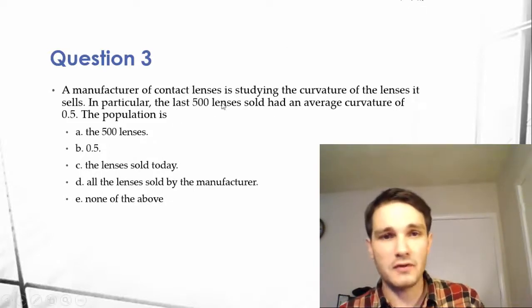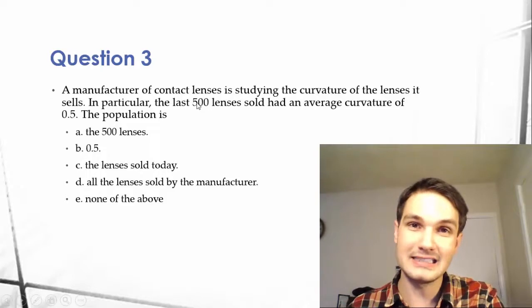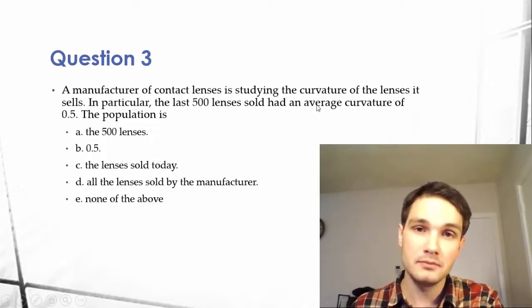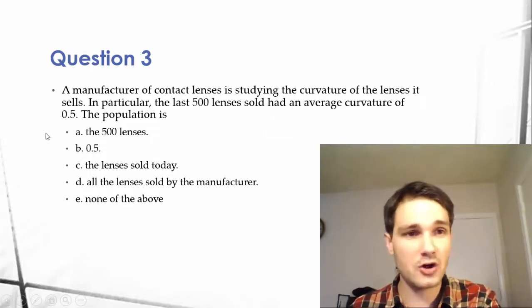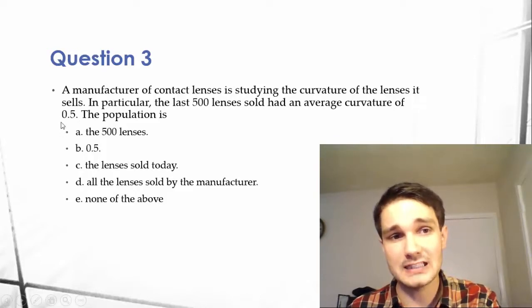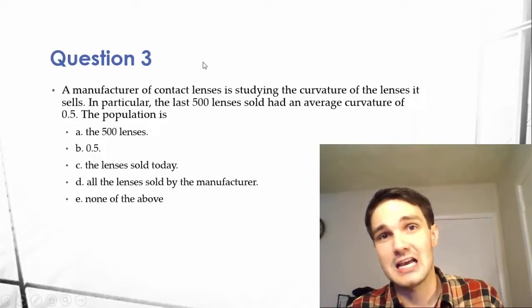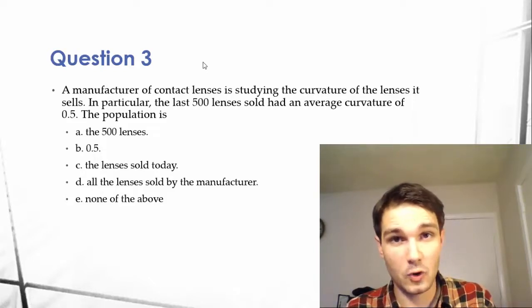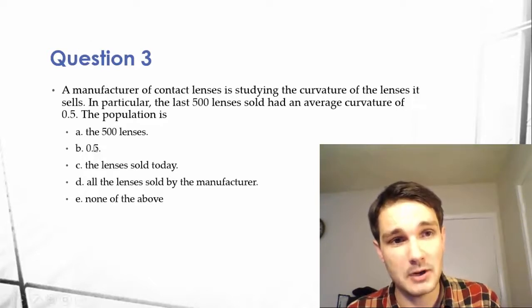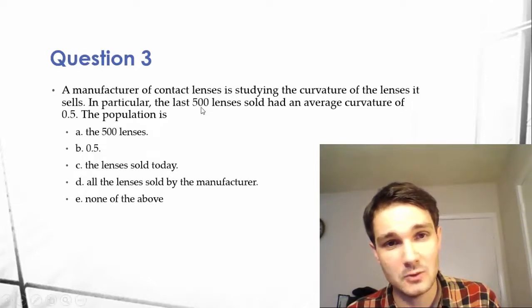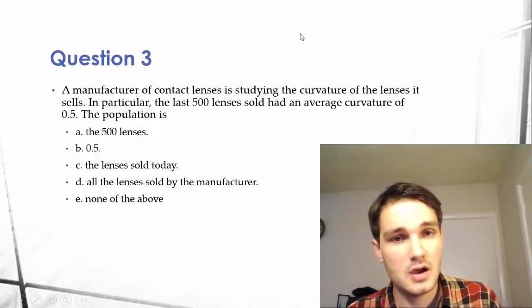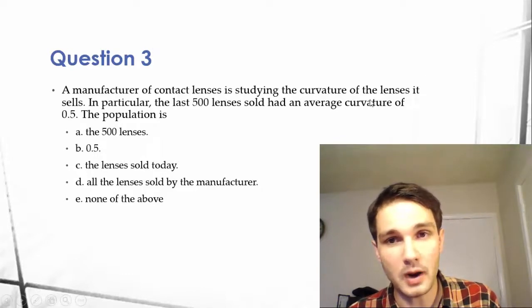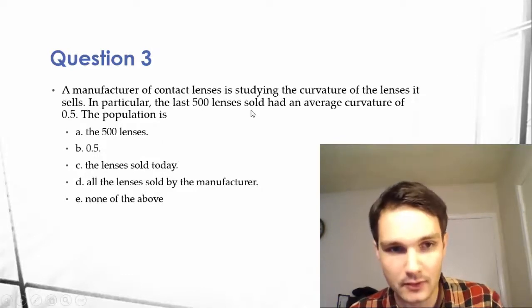The 500 lenses would be a sample, because it's not the entire population. They had an average curvature of .5, so that would be a statistic. A statistic is a characteristic of a sample. This would be our statistic, this would be our sample. We don't know what the population is. It isn't readily apparent to us.